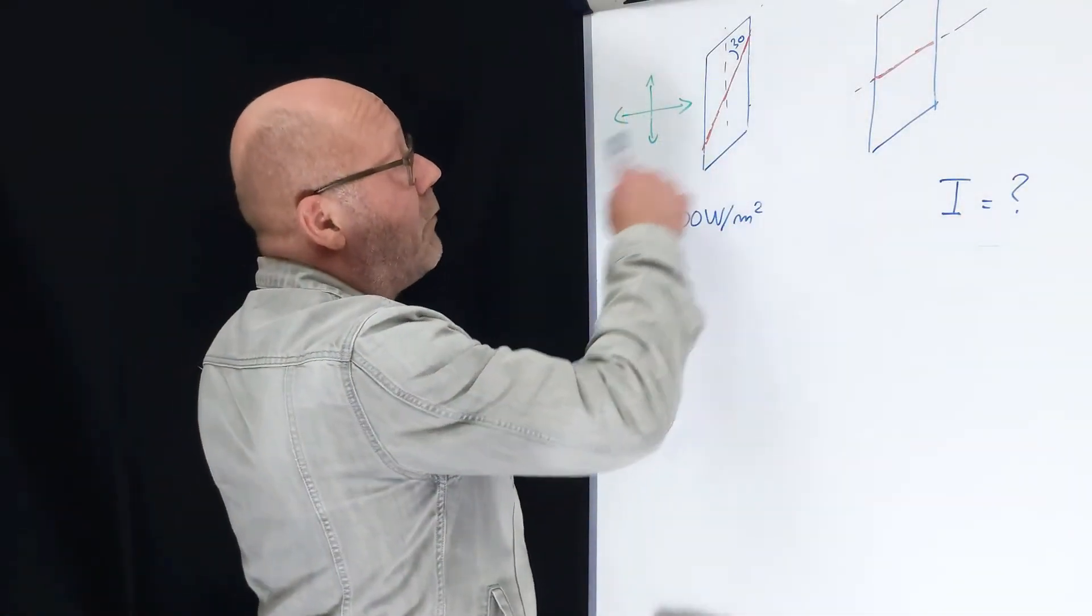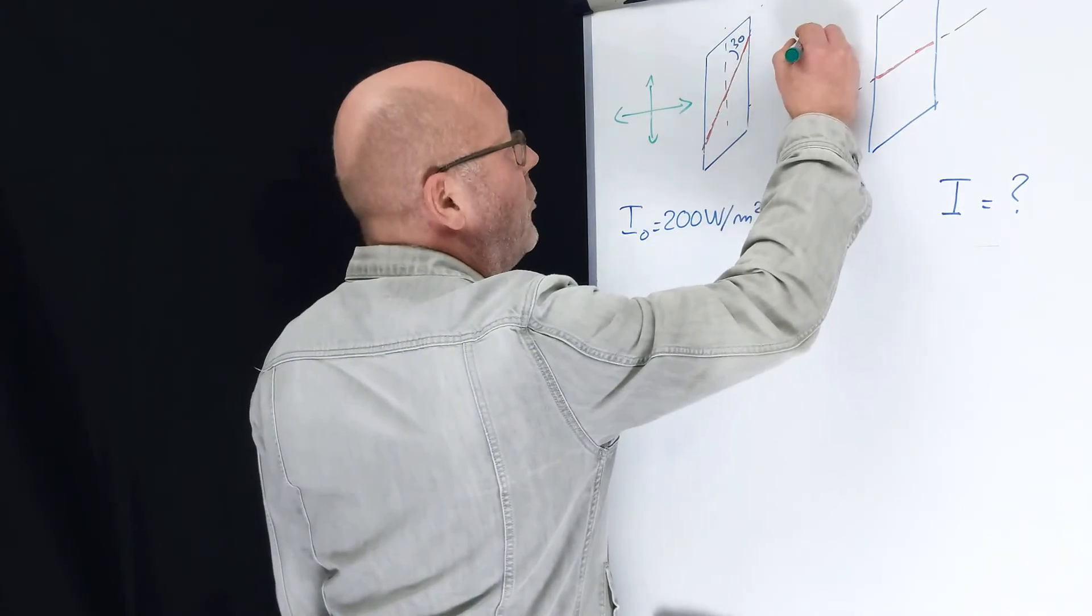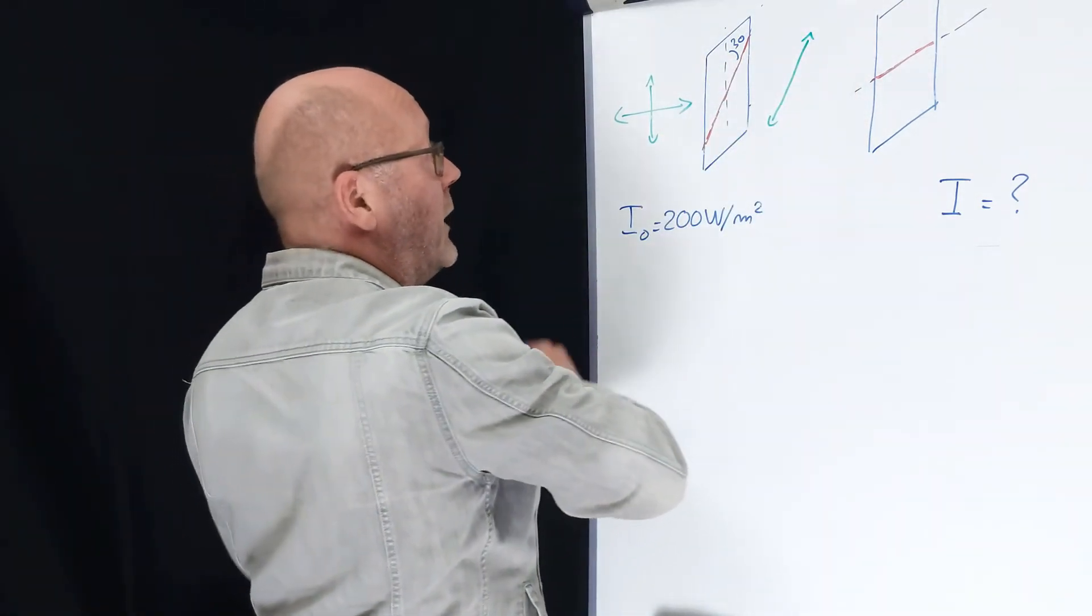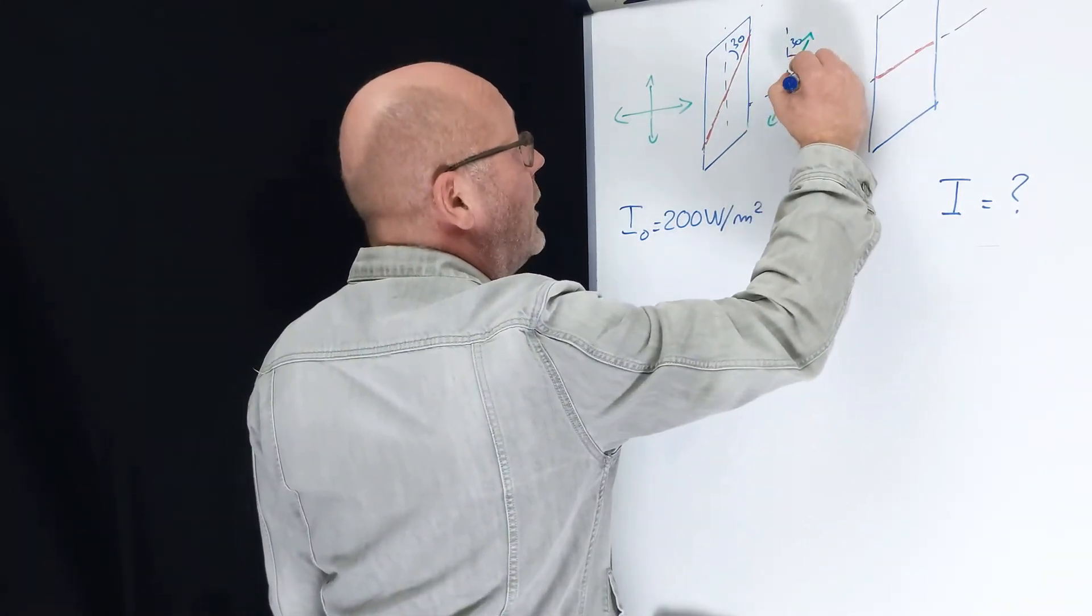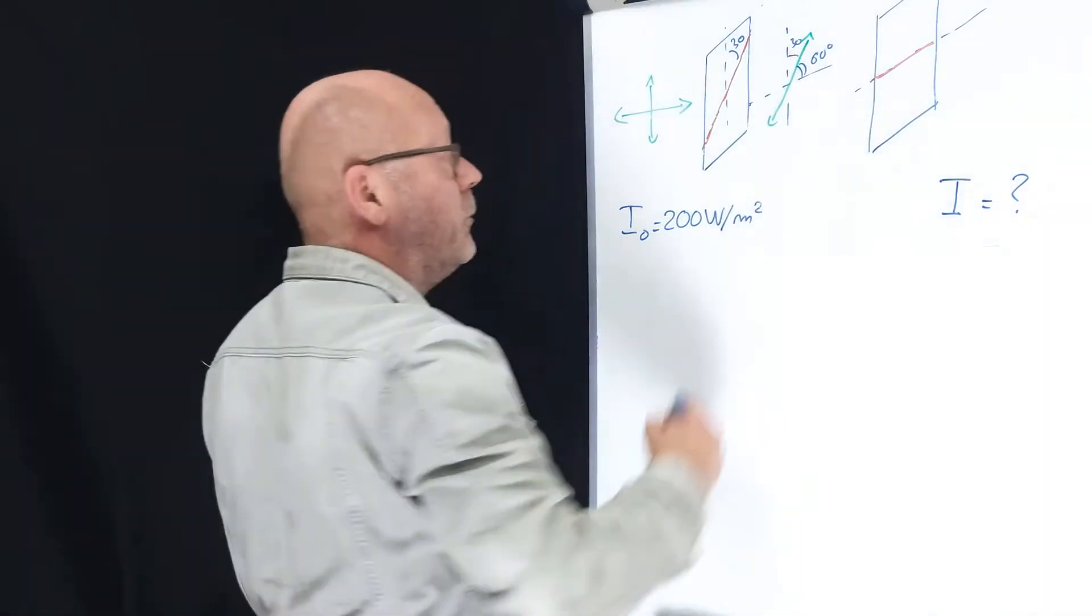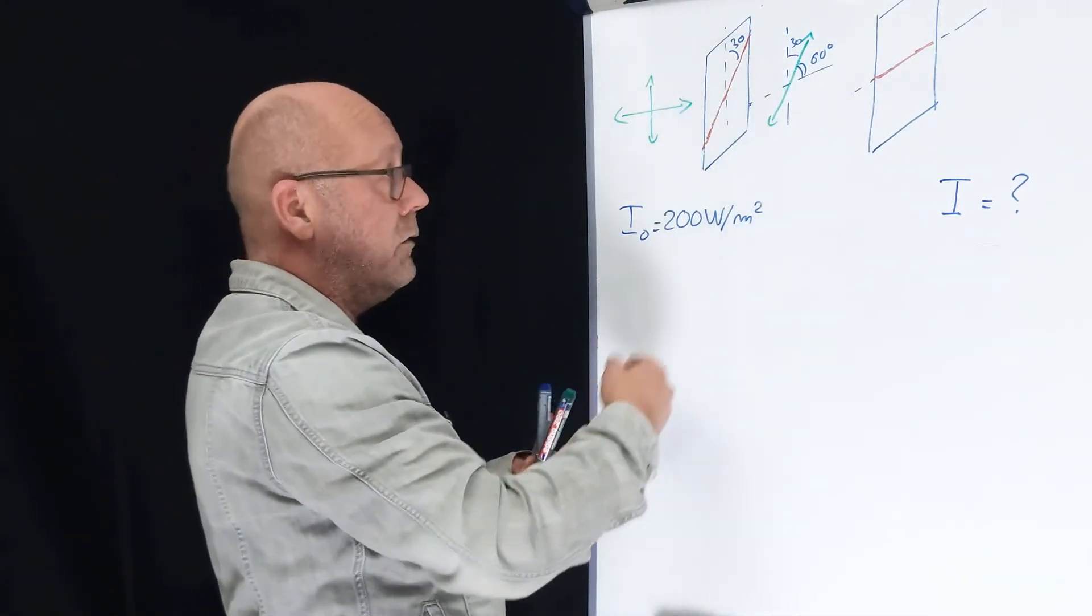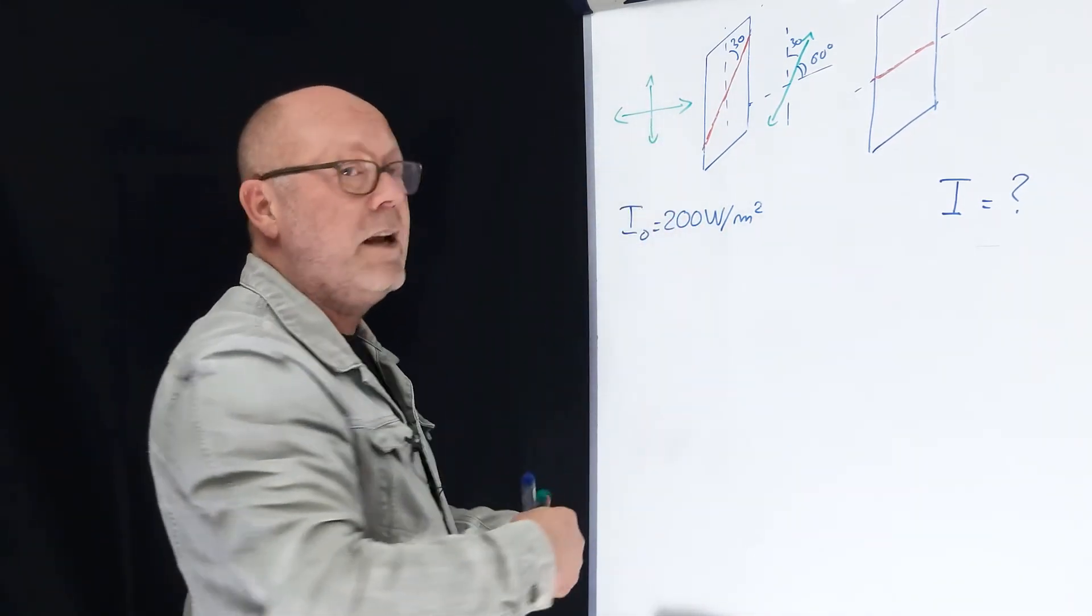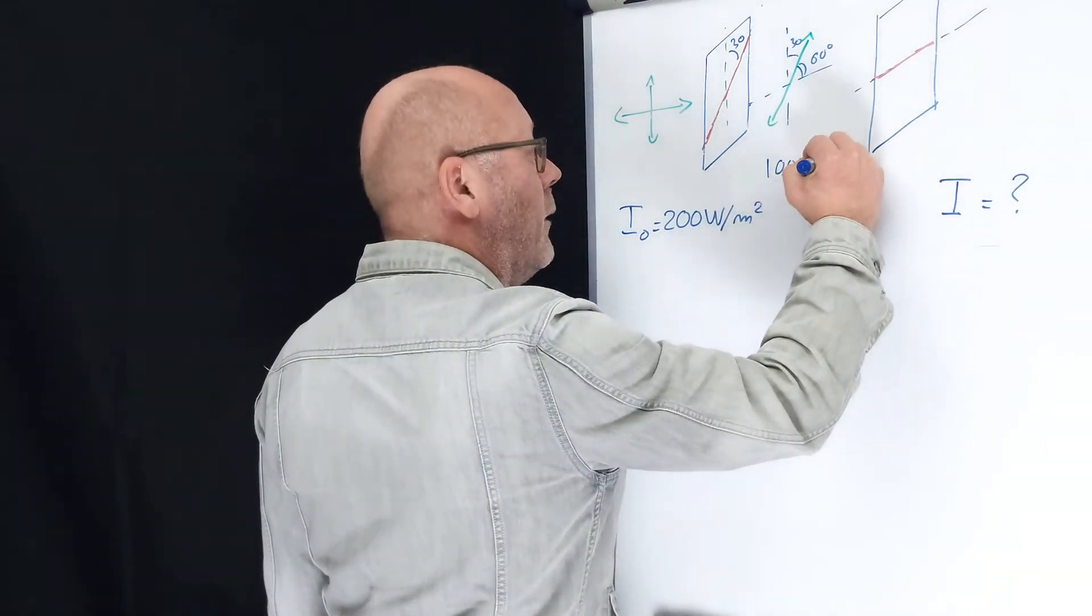The light that comes out of the first polarizer will be polarized along the axis of polarization of this polarizer. So the plane of polarization will make an angle of 30 degrees with the vertical and 60 degrees with the horizontal. The intensity coming out of the first polarizer will just be this divided by 2 because the incident light was unpolarized. So here you have 100 watts per meter square.